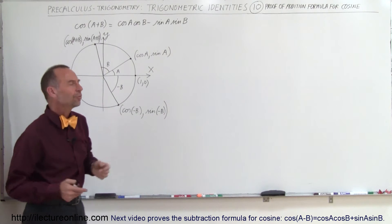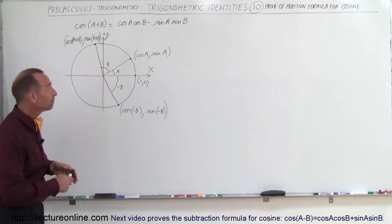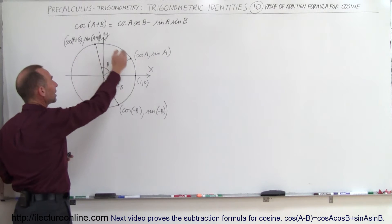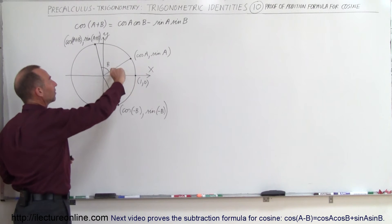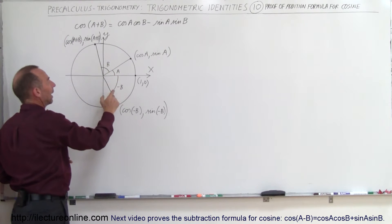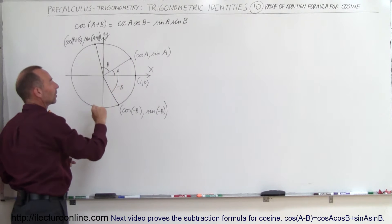So how do we prove that? Well, there's an ingenious method. We have a unit circle, and we consider the angle A, the angle B, and also the angle minus B.